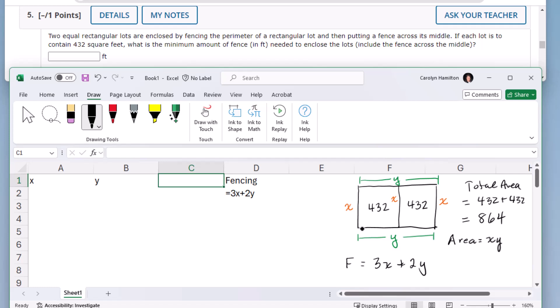So this is where it helps to have y be across the entire length. So if y is across the entire length, then the area has to be both lots combined, which will be 864.